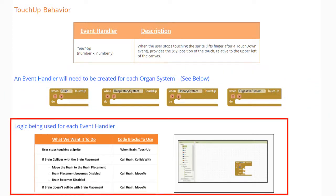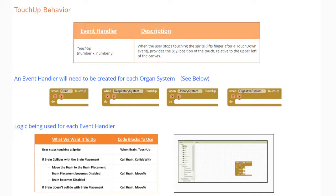The logic we're going to use for this event handler is as follows: if the user stops touching a sprite, we want that sprite to be triggered by a touch up event handler. If the organ system collides with the organ system placement, we'll call that organ system to collide with the organ placement and move the organ to its correct placement. We'll also disable the placement by setting it to false, and disable the organ system itself as well. If the condition is not met and the organ system doesn't collide with the placement, we'll call that organ system to move back to its original location.